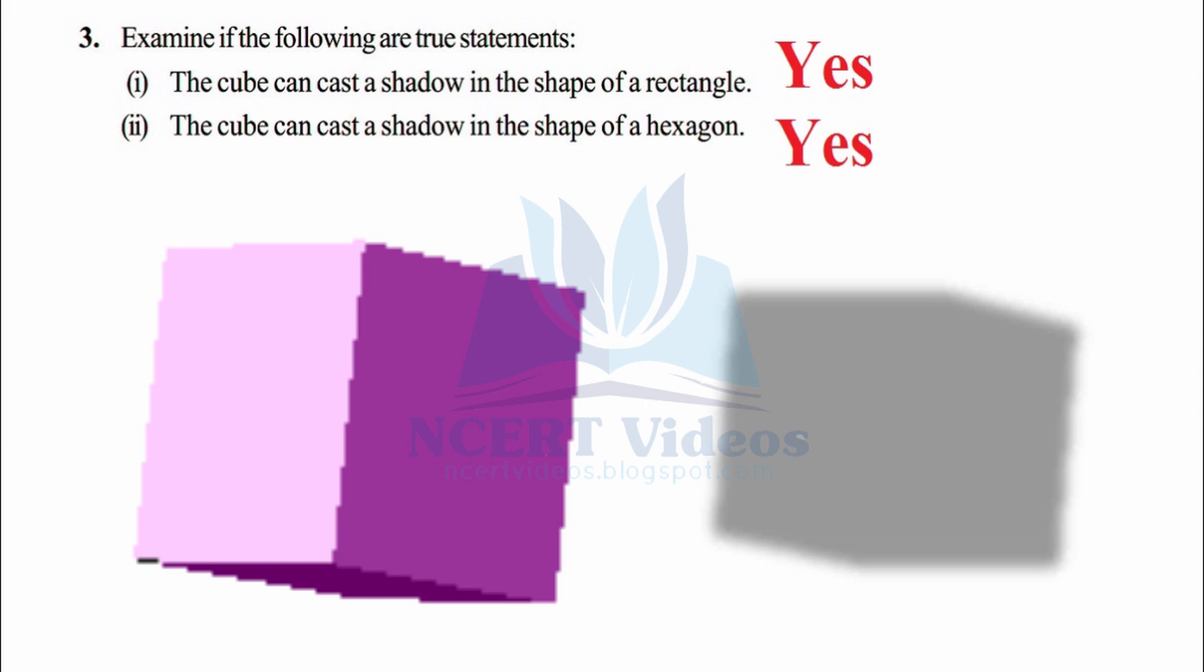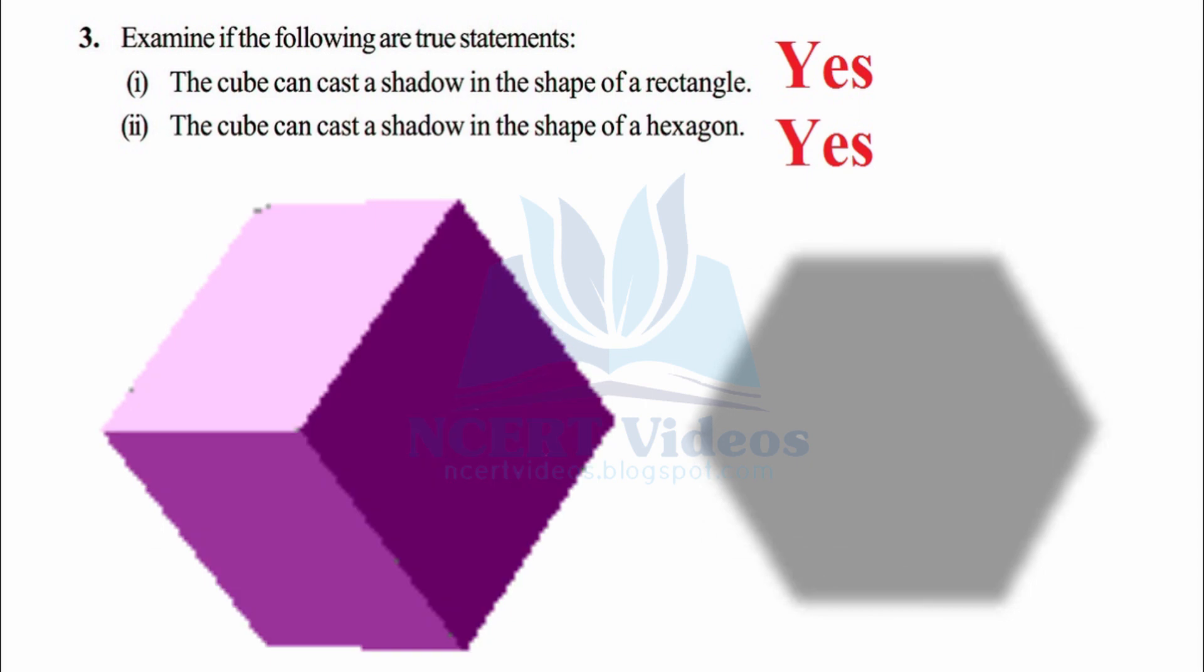And now second, the cube can cast a shadow in the shape of hexagon. Well now you can see this cube when tilted at certain angle and the shadow falls in certain angle, it can cast a hexagon, that is six-sided polygon. So the answer for both parts first and second is yes, and that completes your last question, question number third.